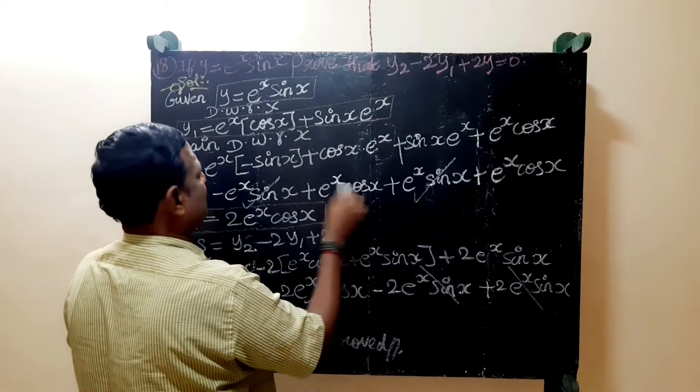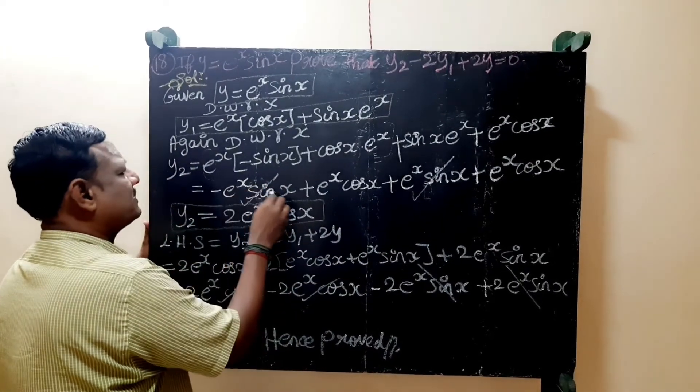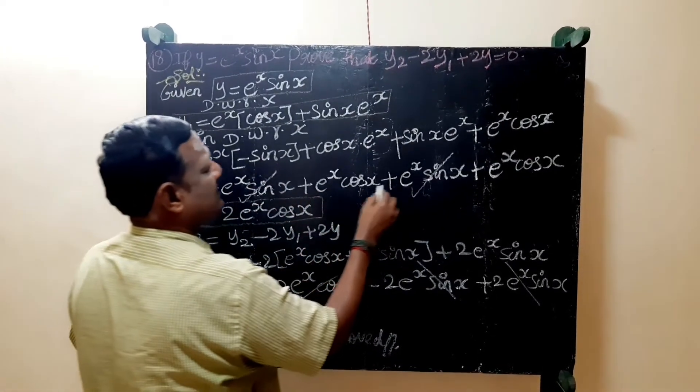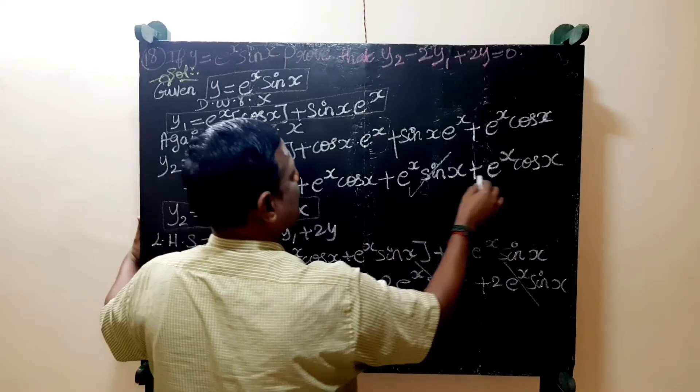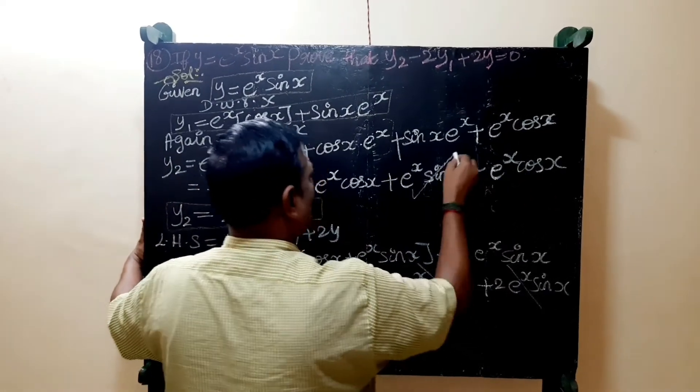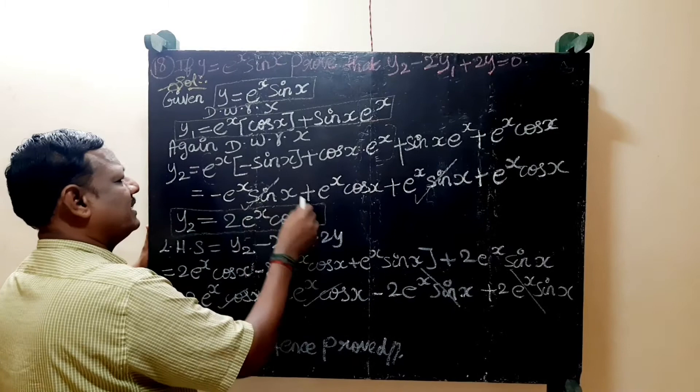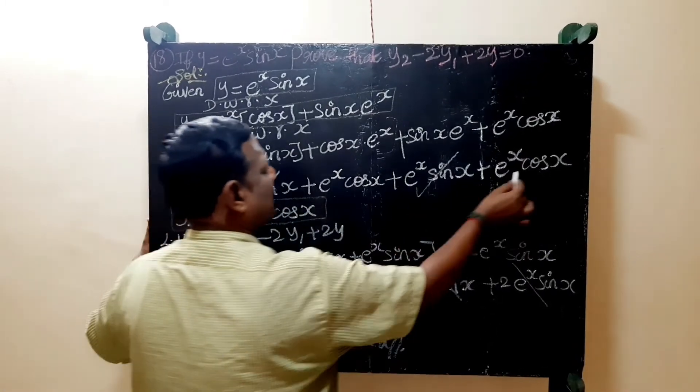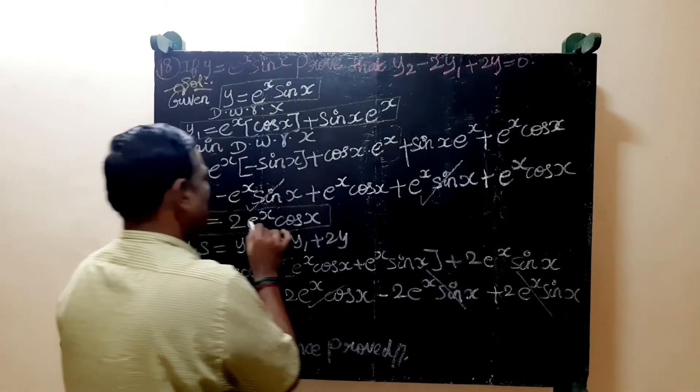So if we can remove: minus e power x sin x plus e power x cos x minus e power x sin x plus e power x cos x. This means e power x sin x and here e power x sin x is equal to y2.